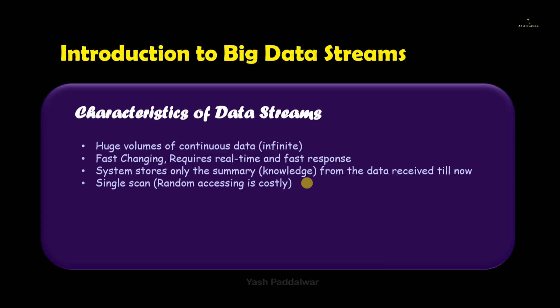The next characteristic is that it takes a single scan. This means that whenever you traverse through the entire streaming data, it should be sequential and in a single scan. Because the data is continuous and huge in volume, random accessing will be costly. If you want to access the data in random fashion it's not impossible, but it will be very much costlier. Hence generally it supports a single scan. These are the most important characteristics of big data streams.